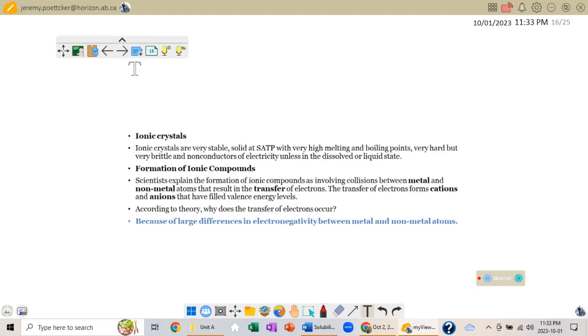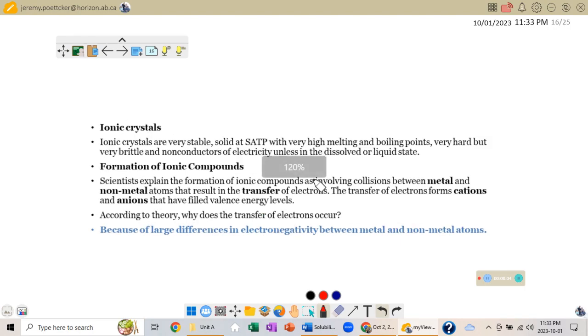So ionic crystals - some of this is bringing together stuff we've already talked about. Ionic crystals are very stable. They are solid at SATP, standard ambient temperature and pressure, which works out to 25 degrees Celsius and 100 kilopascals, almost one atmosphere. They have very high melting and boiling points. They're very hard but also very brittle. They do not conduct electricity unless we dissolve them or melt them.